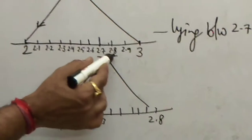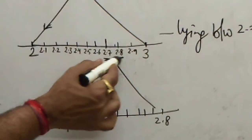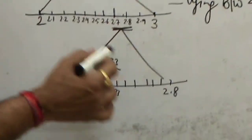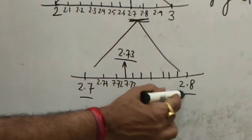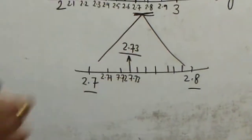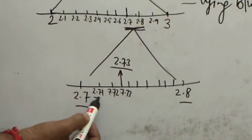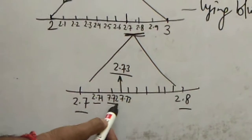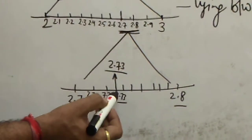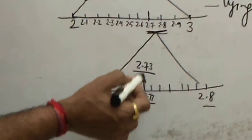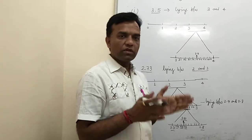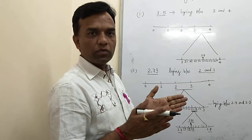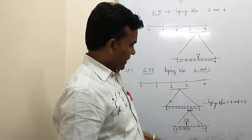We underline 2.7 and 2.8, then enlarge that section again. Dividing 2.7 and 2.8 into 10 parts gives us 2.71, 2.72, and 2.73. So we underline 2.73 — that is the successive magnification. We magnified the number twice, each time deciding which two values the number lies between.